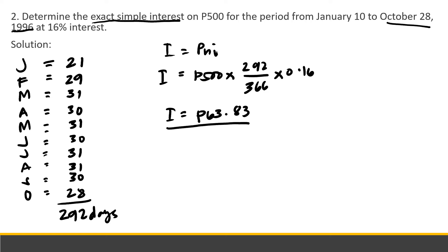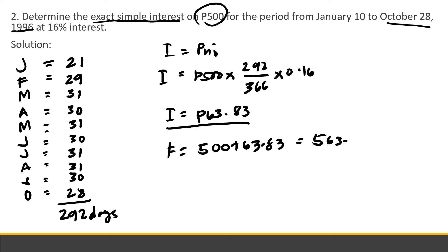The interest is relatively small because the principal is only 500 pesos — if it were 500,000, the interest would be much larger. The future worth is simply the principal plus the interest: F = 500 + 63.83 = 563.83 pesos. That is the total amount to be returned on October 28, 1996.